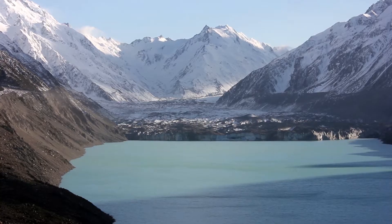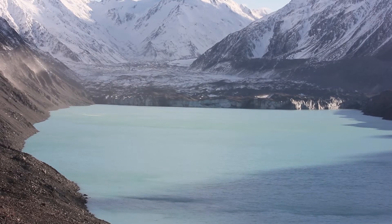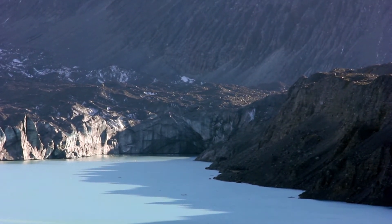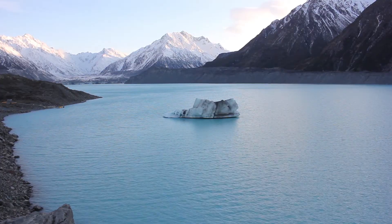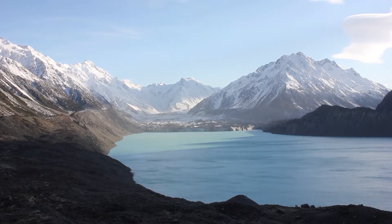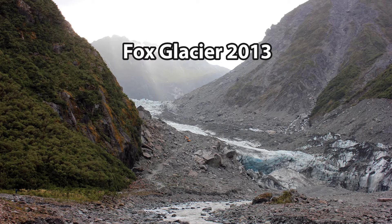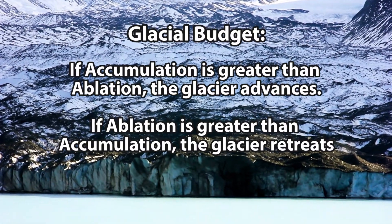When more melting takes place than ice forming, the glacier is said to be in retreat. The Tasman glacier, for example, has been in retreat, causing the Tasman lake to grow increasingly larger. In 1973 this lake did not exist. Over a single year, a glacier may both grow and retreat depending on the rate of accumulation compared to the rate of ablation. This is called the glacial budget.